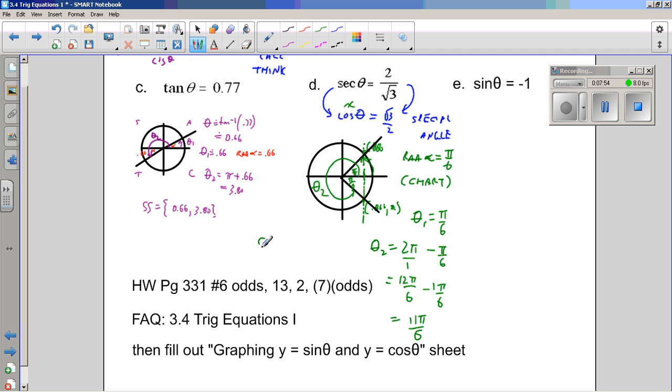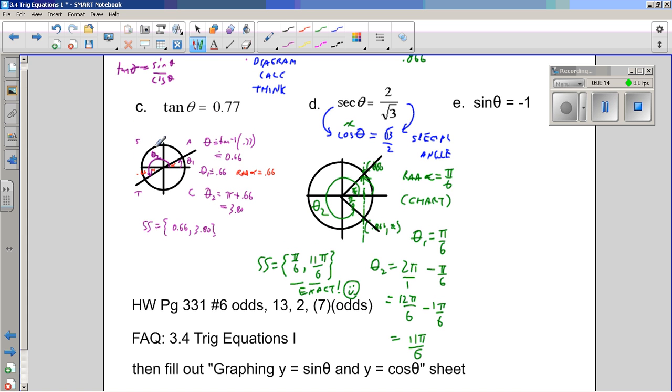That second angle is 11 pi over 6, and there are my two solutions. And the solution set equals pi over 6 and 11 pi over 6. Notice I didn't use my calculator. These are exact, and that's awesome. We love being exact in math class. Alright, dandy. Last one.